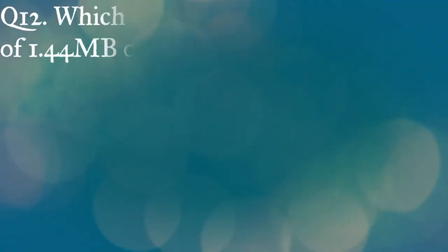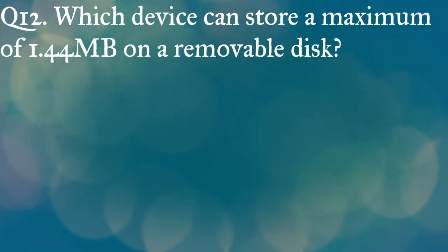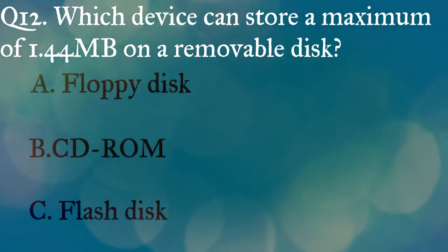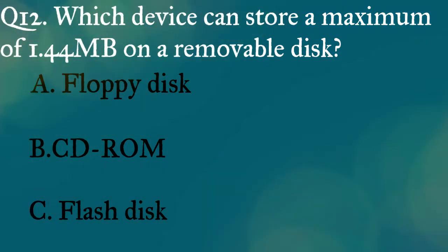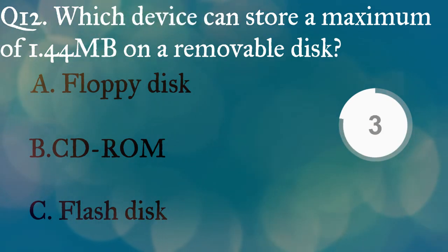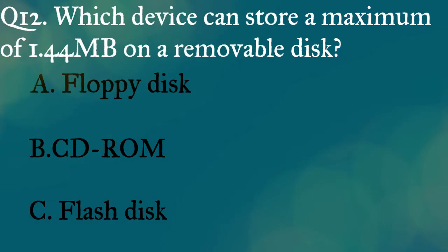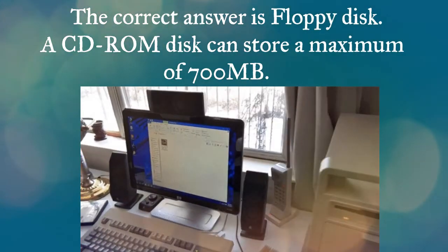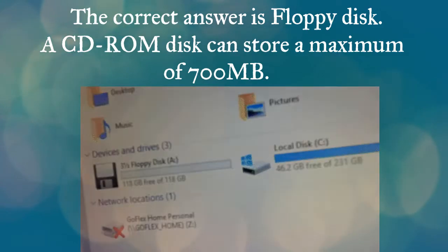Question twelve: which device can store a maximum of 1.44 MB on a removable disc? A) a floppy disc, B) a CD-ROM, C) a flash disk. The correct answer is floppy disk. A CD-ROM disc can store a maximum of 700 MB.